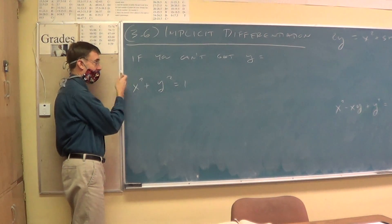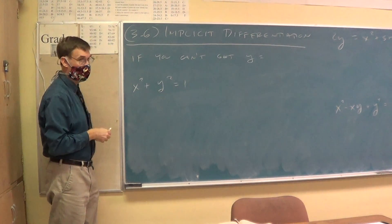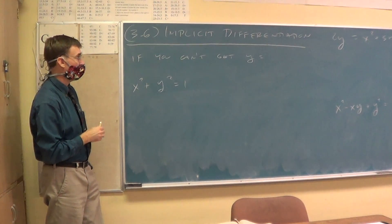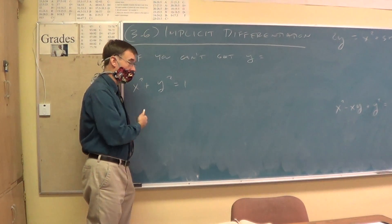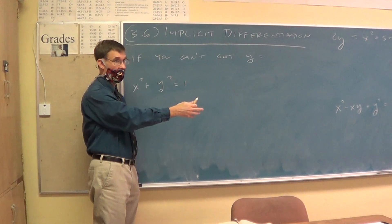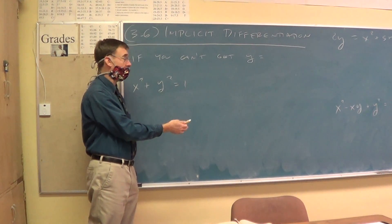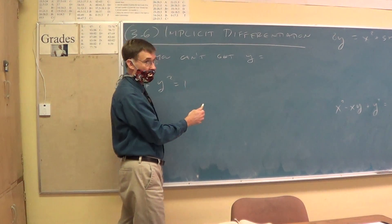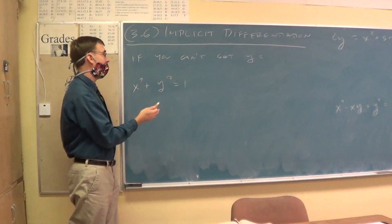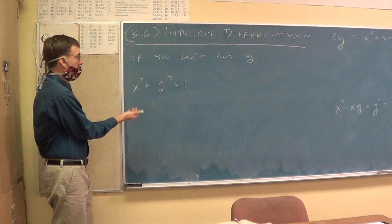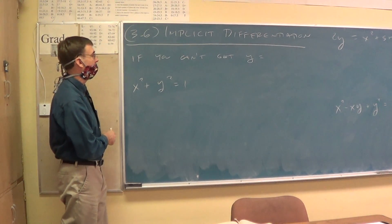So here's what's in there. Sometimes it's just not very convenient to get the y alone. Every derivative you've done to this point of the year, I gave you an equation that was y equals whatever. Sometimes it was little, sometimes it was quite large. But it was always y equals, and you did the derivative. Sometimes the y is in there. So we have a thing called implicit differentiation.